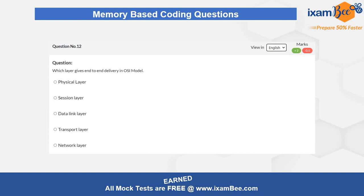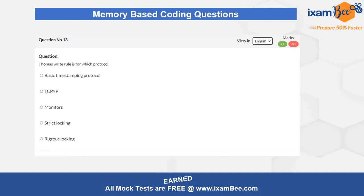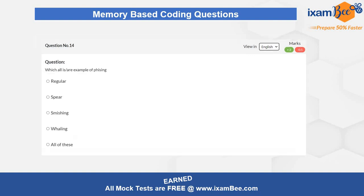That OSI layers question is very easy and theoretical. The next question is related to the Thomas Write rule and the kind of protocol it is applicable to — you are asked to identify which type of protocol it relates to. This is a static but conceptual question. Question number four in this video is related to phishing attacks in cybersecurity — you have to identify all examples of phishing attacks and select the correct answer.